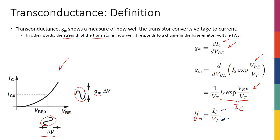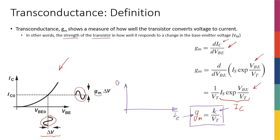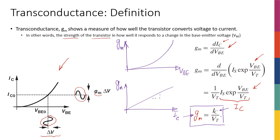This equation is another way to see that trade-off: for higher GM, I have to spend more DC current in my transistor, and therefore pay with more power. But really, it tells me there is a linear relationship between IC and GM. With respect to VBE, since the derivative of an exponential is still an exponential, GM versus VBE is still exponential. But versus IC, I have a linear relationship, and the slope of that line is 1 over VT.